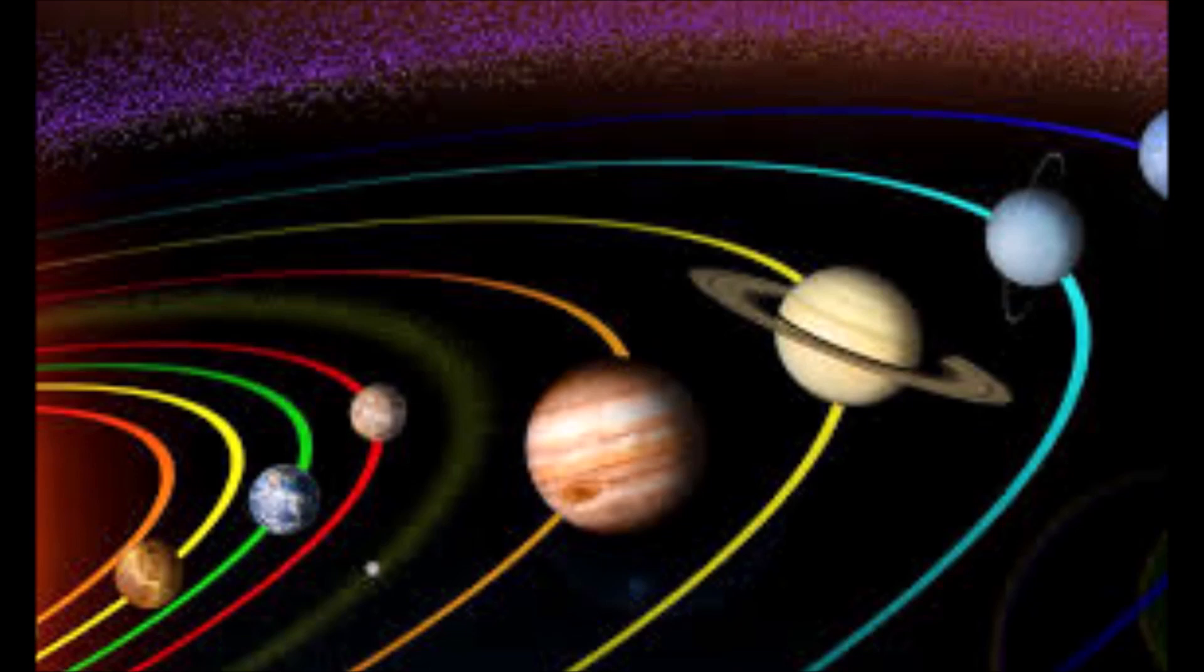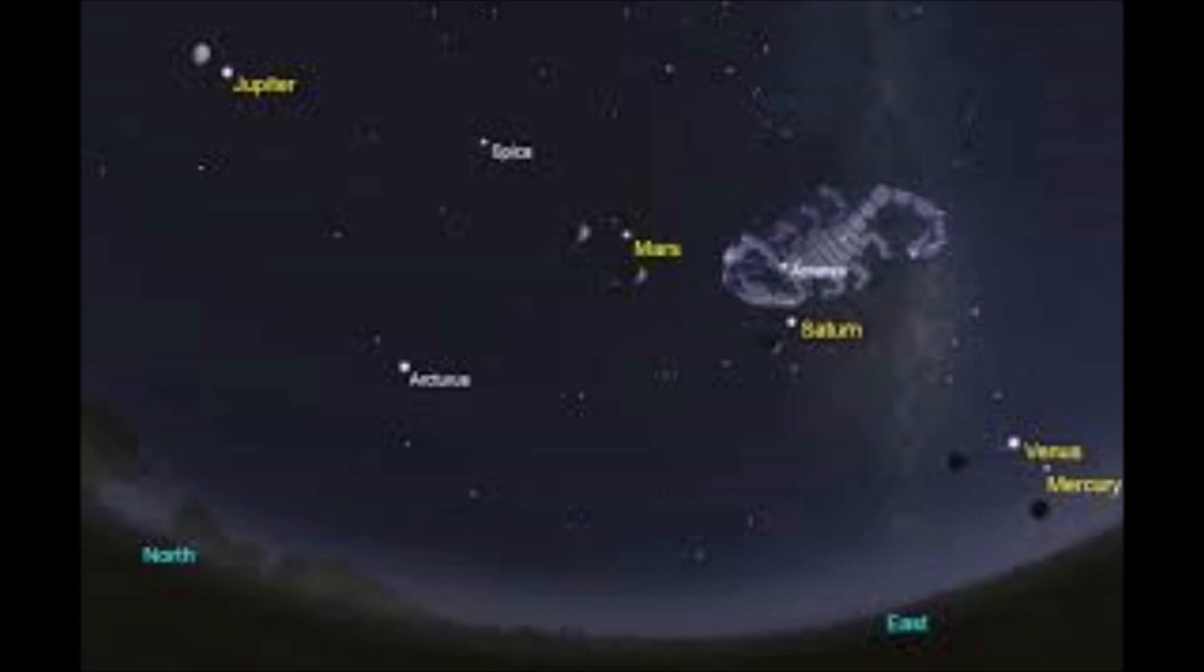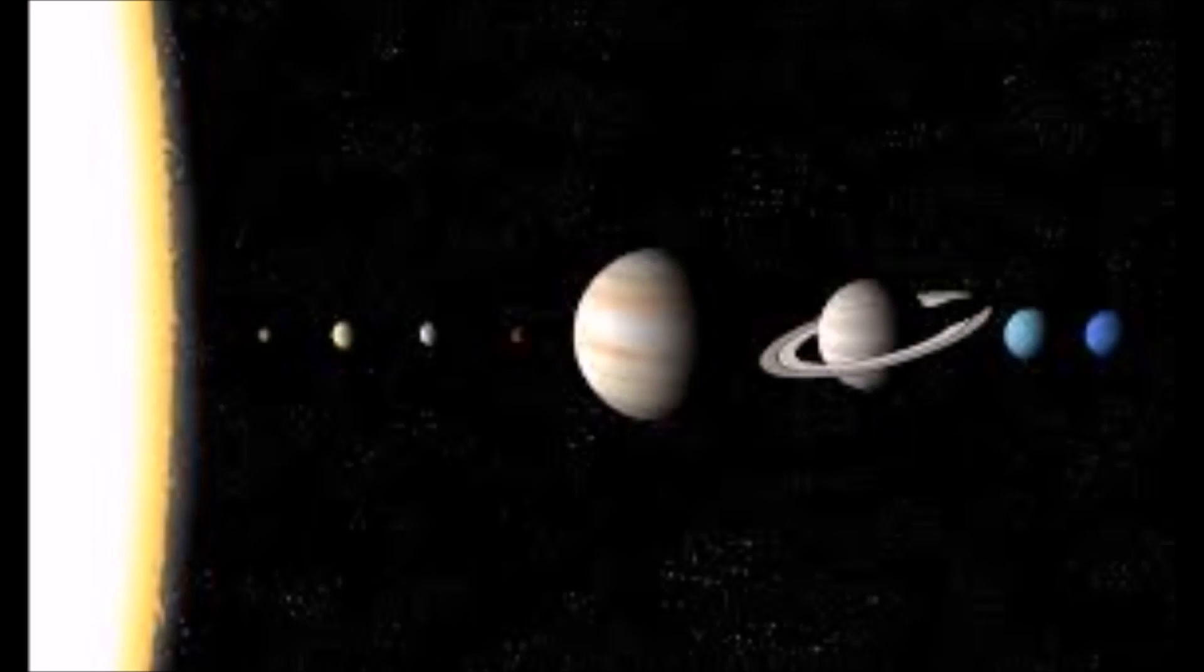Neptune is about the same size as Uranus but much further away, making it harder to see. With a modest telescope, it appears only as a bluish star. While the right observing conditions and a high quality telescope are needed to reveal Neptune's disk.